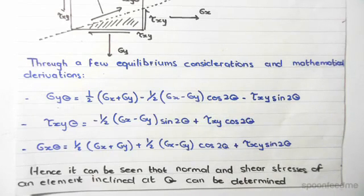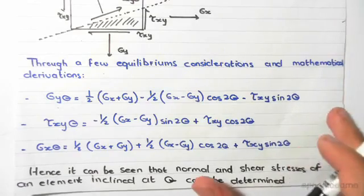We can use these equations and substitute these parameters into them to work out the new normal and shear stresses due to the fact that it's been rotated by 10 degrees anti-clockwise.